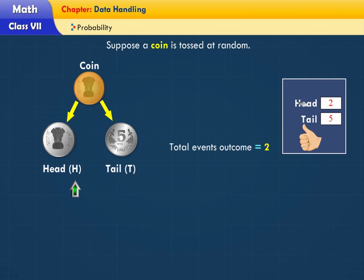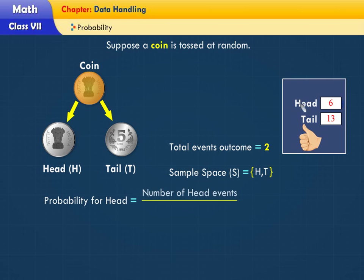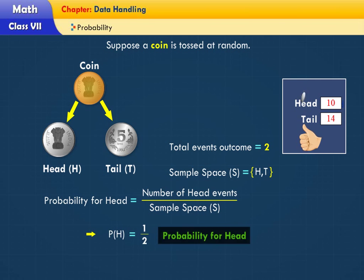Total event outcomes equal two. Probability for head equals the number of head events divided by sample space S. P(H) equals one by two, the probability for head.